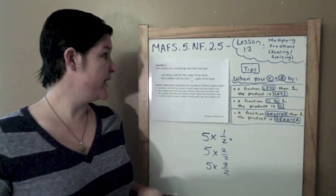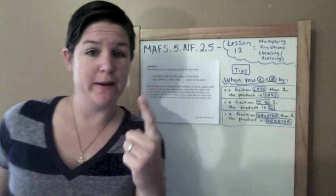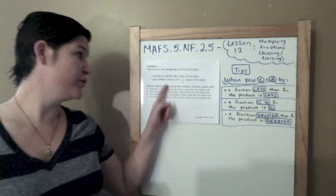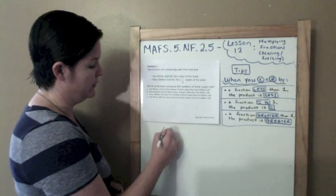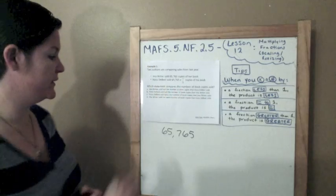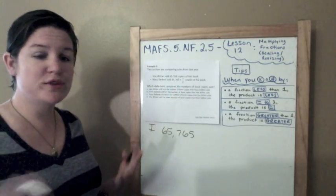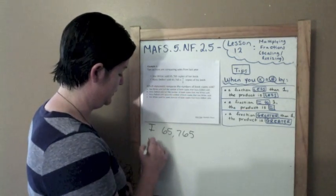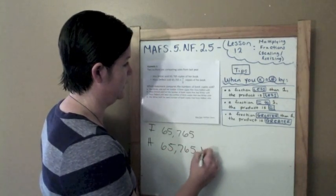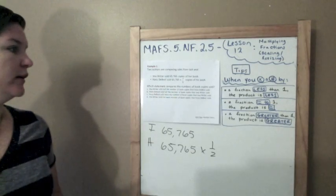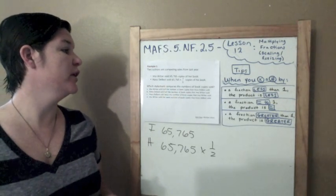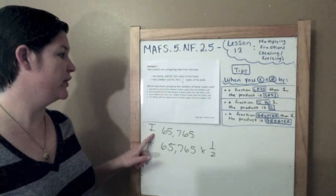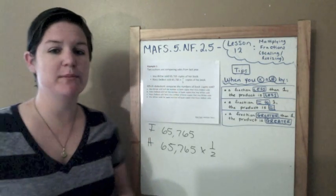So that's what we're going to be working on today. Example 1: Two authors are comparing their sales from last year. Ima Writer sold 65,765 copies. Who's the Best sold 65,765 times one half of that amount. Which statement compares the number of book copies sold? Option A says: Ima Writer sold half of the number of book copies that Who's the Best sold.